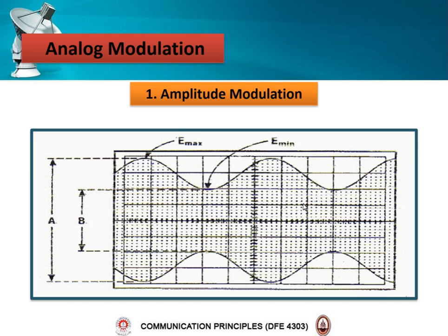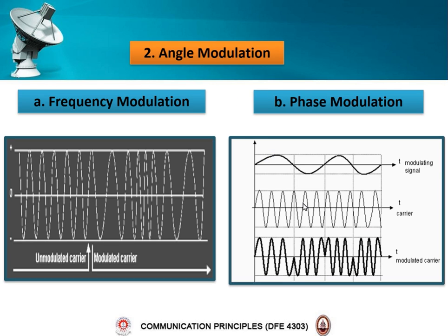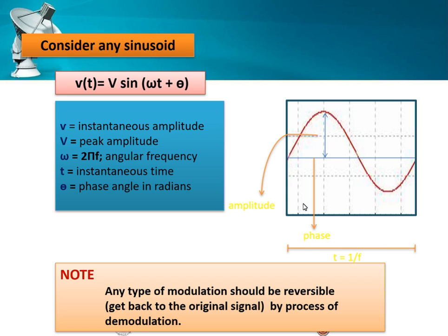The first type of modulation is amplitude modulation. We also have angle modulation, which is classified into two types: frequency modulation and phase modulation.